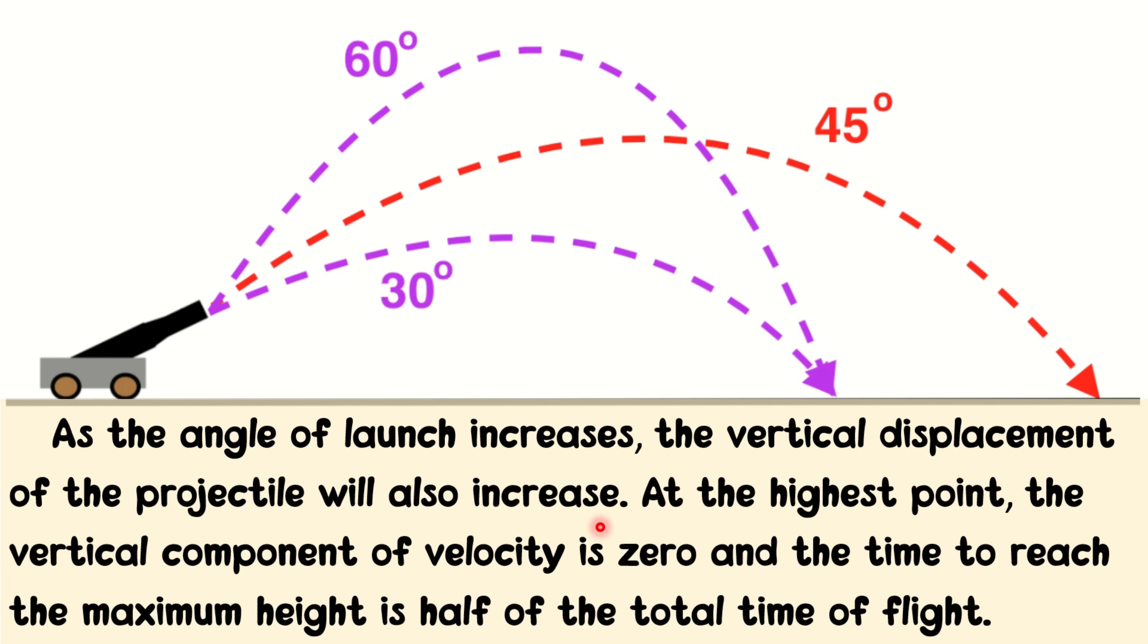As the angle of launch increases, the vertical displacement of the projectile will also increase. At the highest point, the vertical component of velocity is zero. And the time to reach the maximum height is half of the total time of flight. Now, let us have an example problem.